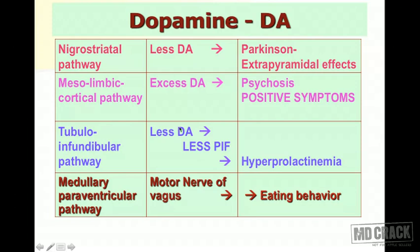The third pathway is the tuberoinfundibular pathway. Less dopamine means less prolactin inhibitory factor — since dopamine is the same as the prolactin inhibitory factor — leading to hyperprolactinemia. The fourth is the medullary paraventricular pathway (motor nerve of vagus), which is concerned with eating behavior. These are the four important areas where dopamine acts.